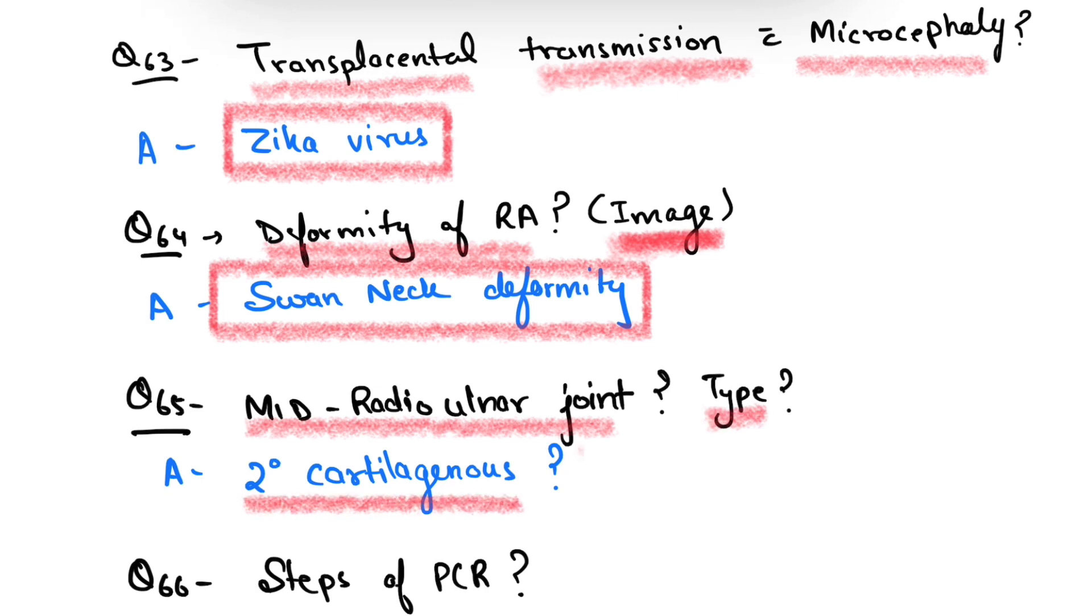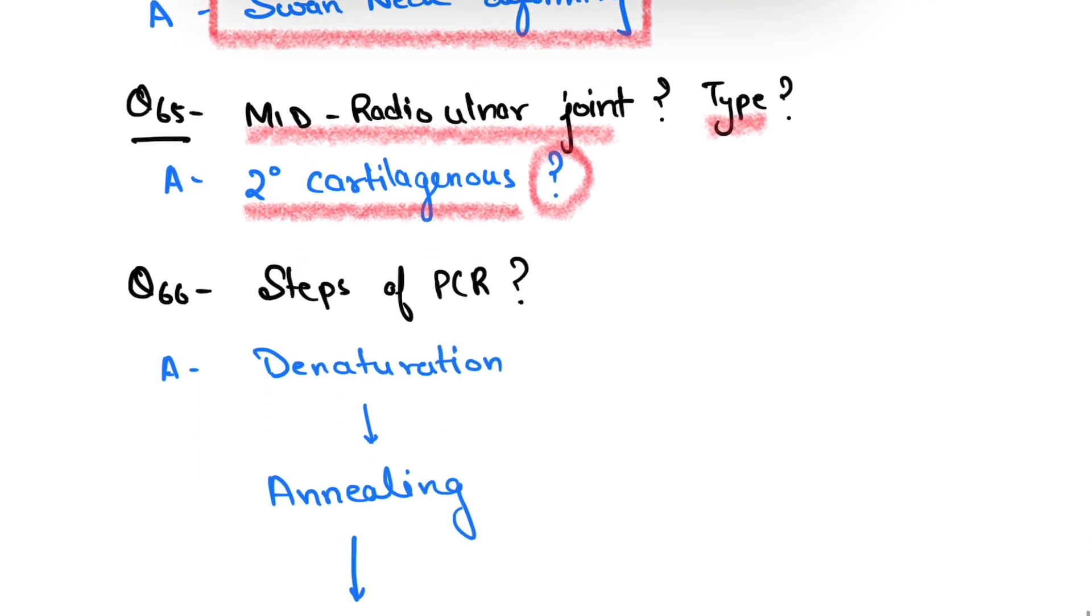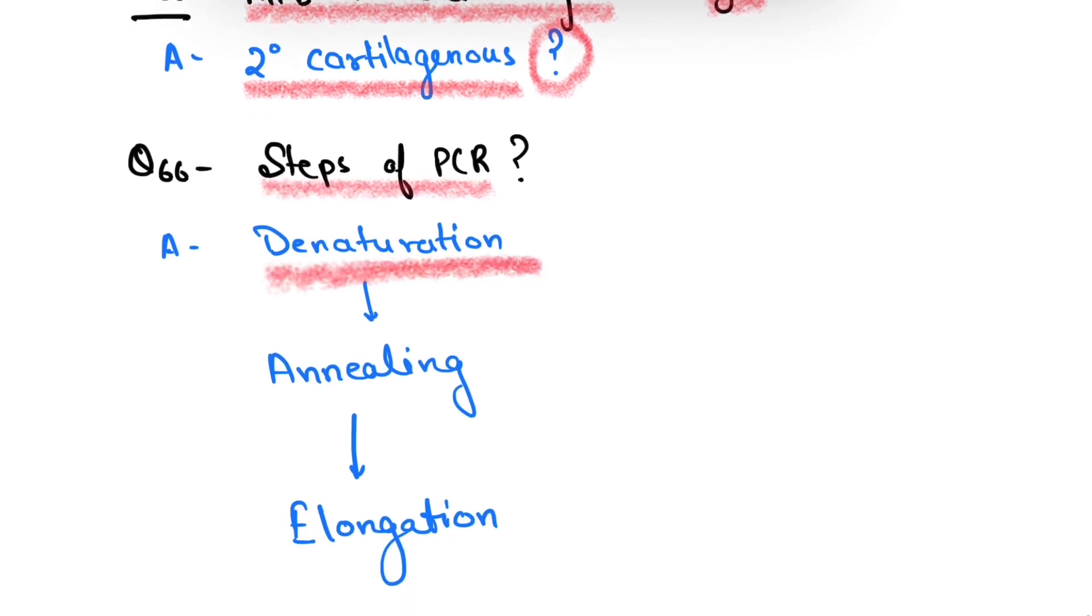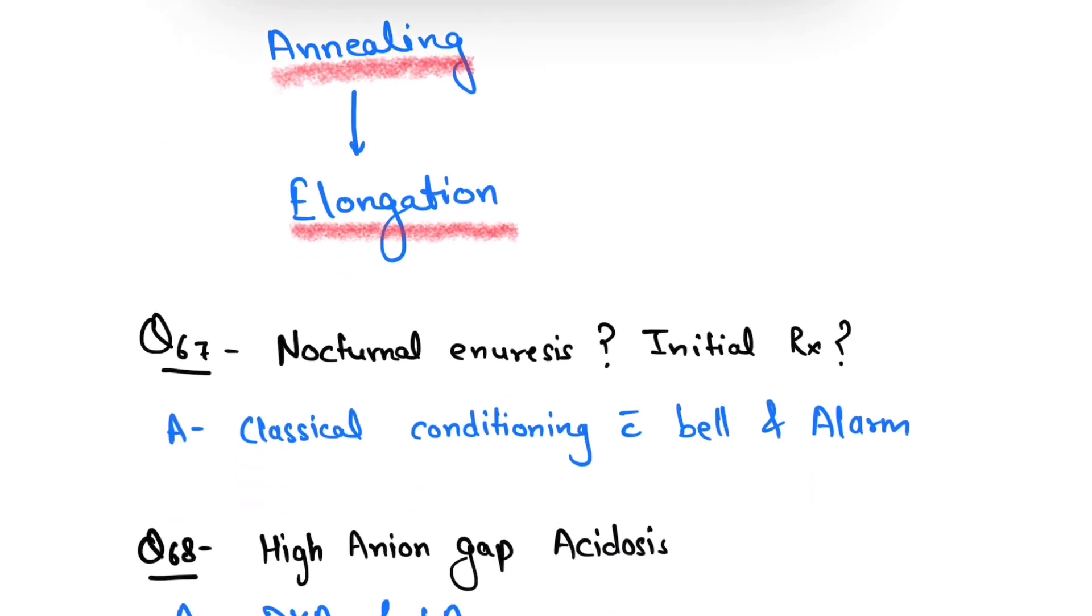But I am not sure. Please comment your answer below if I am correct. Another question: steps of PCR. The first step is denaturation, second is annealing, and the third one is elongation. Question number 67.